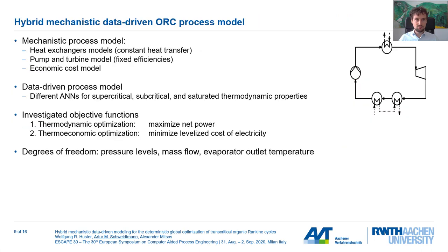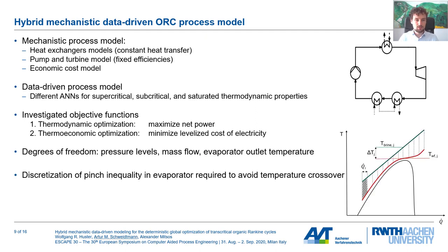What we propose is to build a hybrid mechanistic data-driven model. We implement mechanistic models for the unit operations — heat exchangers, pumps, and so on — and combine them with data-driven neural network models. We train data-driven models on data generated from CoolProp, then combine the data-driven models with mechanistic models for process optimization. In our case study, we have two objectives: maximizing net power output and an economic objective, the levelized cost of electricity. The degrees of freedom include pressure levels, mass flow, evaporator outlet temperature, and so on. We also discretize the pinch inequality for the evaporator to avoid temperature crossovers.